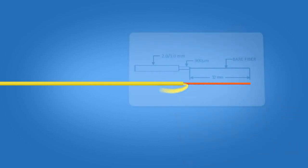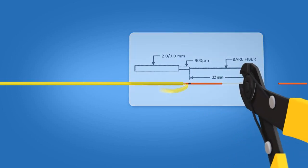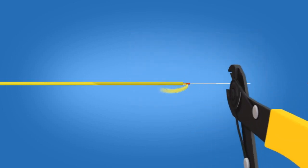Using the template on the front of the connector packaging, mark the fiber at 32 mm from the end of the 900 micron fiber. Strip 32 mm of 900 micron coating off, exposing the bare fiber. Clean the fiber with a lint-free wipe and fiber preparation fluid.